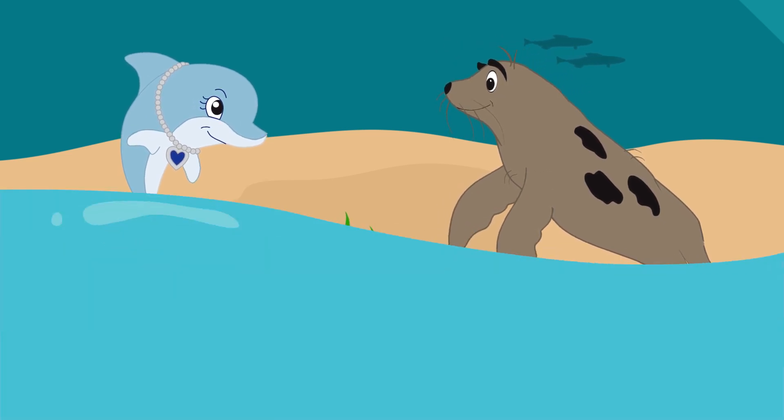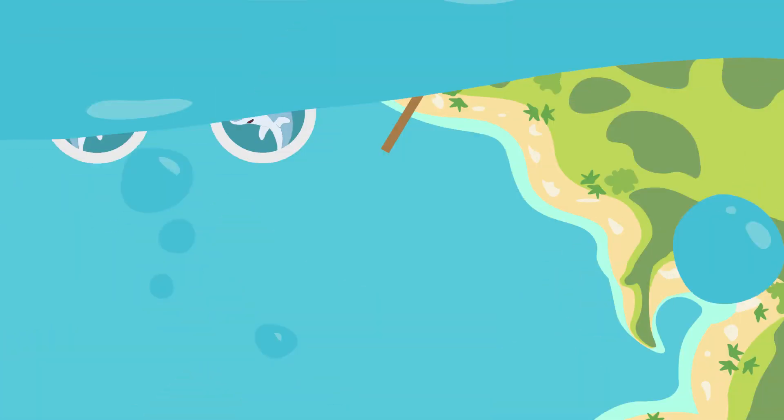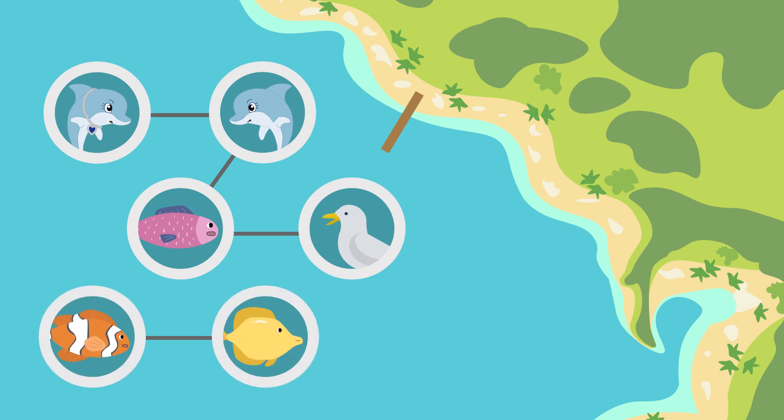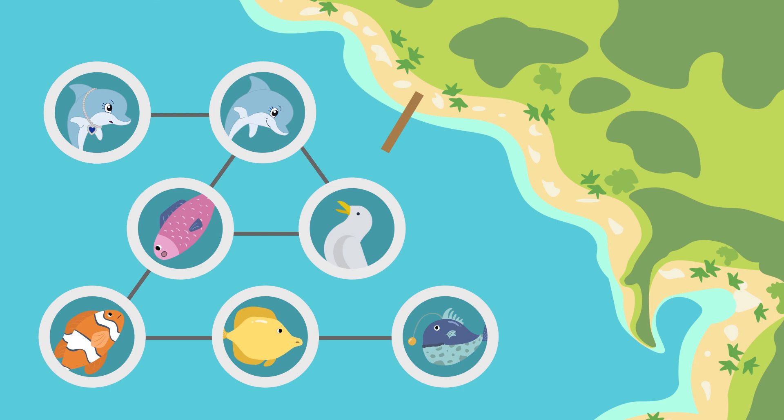But secrets have a funny way of traveling! Marina told the news about the butterflies to the rest of her pod! Her pod described the butterflies to a school of mackerel! The school of mackerel told their seagull friends! Soon, everyone up and down the coast knew all about Inky's butterflies! Turns out the secret cove wasn't so secret anymore!